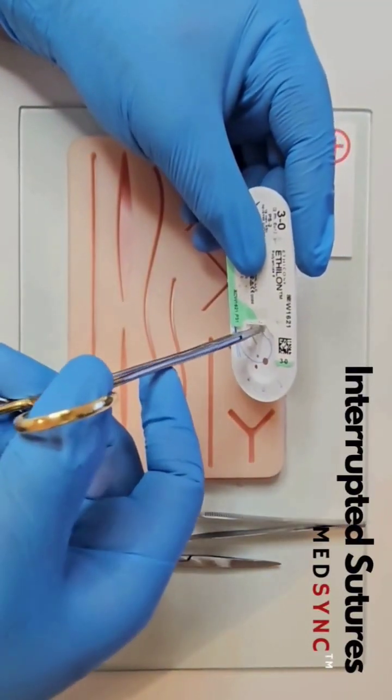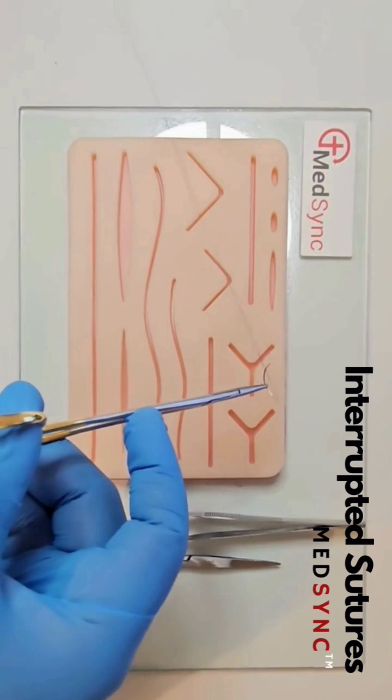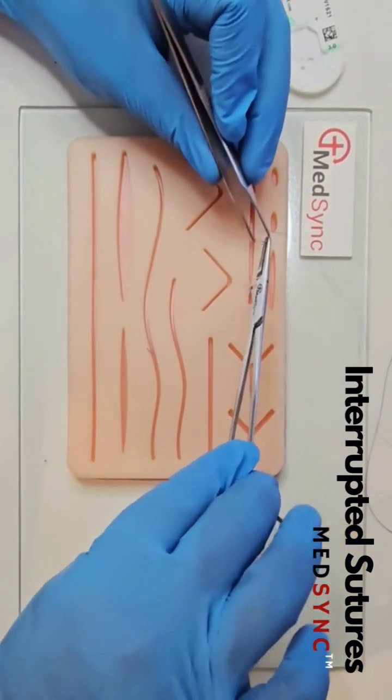Mount the needle in the packet, two-thirds along the body. Keep the needle within the surgical field and pull the packet away.